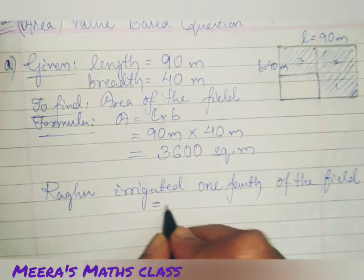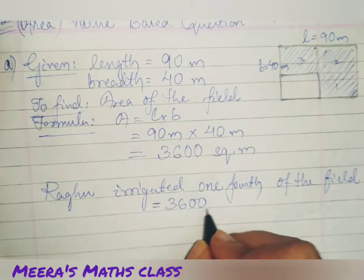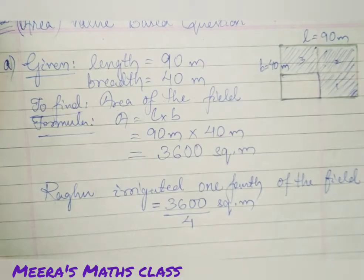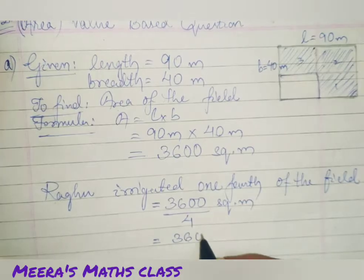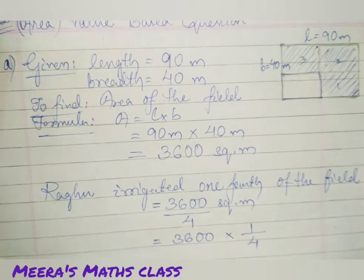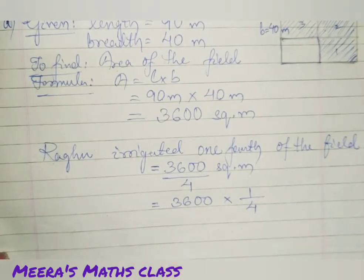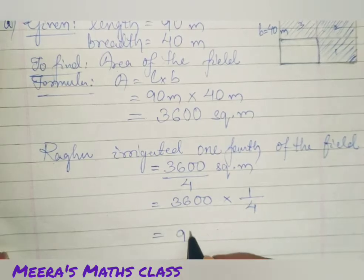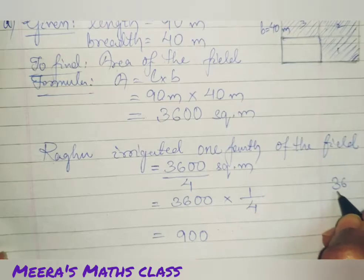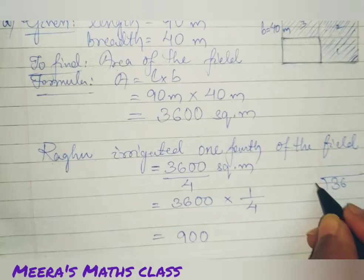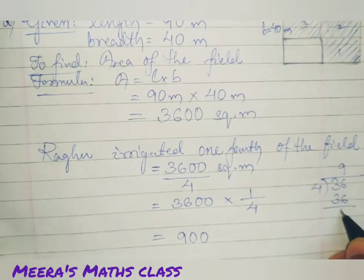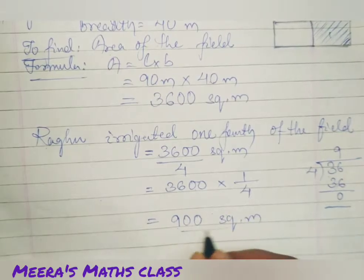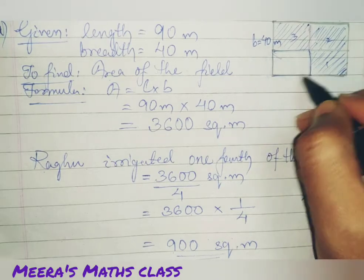One fourth of the field. That means, what you are going to do? 3600 square meter divided by 4. You can write like this. Or, you can write 3600 into 1 by 4. That is, one fourth of the total field. Now, after dividing 3600 divided by 4, the answer is 9 double 0. If you don't know, then you can divide like this. 3600 divided by 4 is 9. So, 9 and two more zeros, you are going to put here. So, 900 square meter is the area of this single portion.